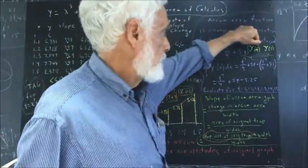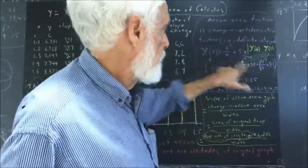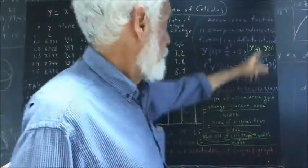So Y of T is T to the fourth over 4 plus T. Y of T, just plugging in T here. And Y of one.